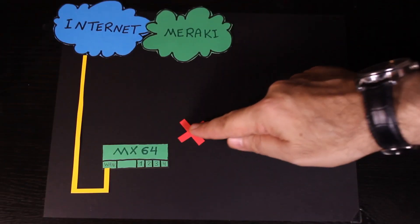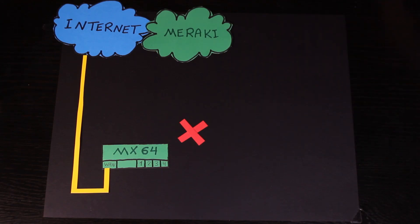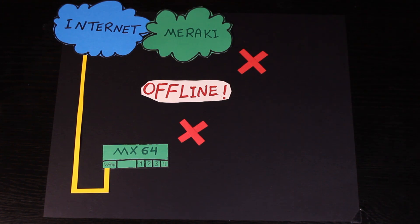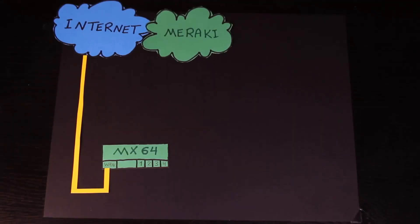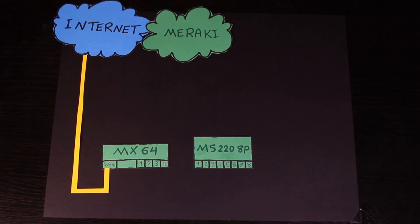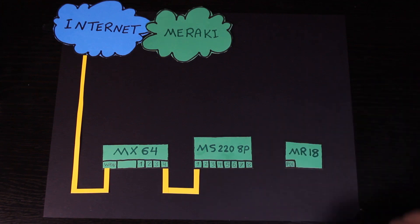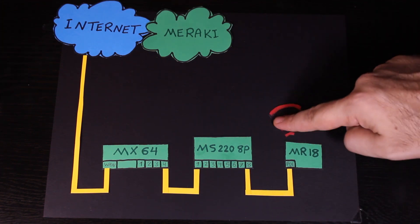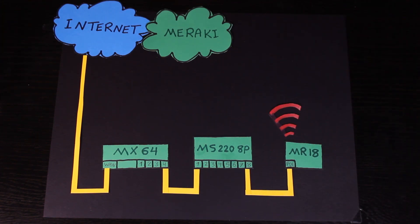In the second video, we talked about how we can troubleshoot in case the MX64 cannot connect to the Meraki cloud and is showing offline in the Meraki dashboard. In the third and last video, we added two more Meraki devices to the network — one MS-228P switch and one MR18 access point. We configured all three devices according to my network plan and made sure they would function as needed.